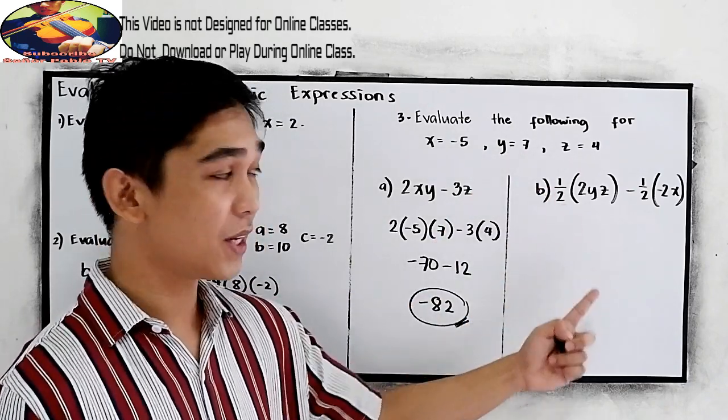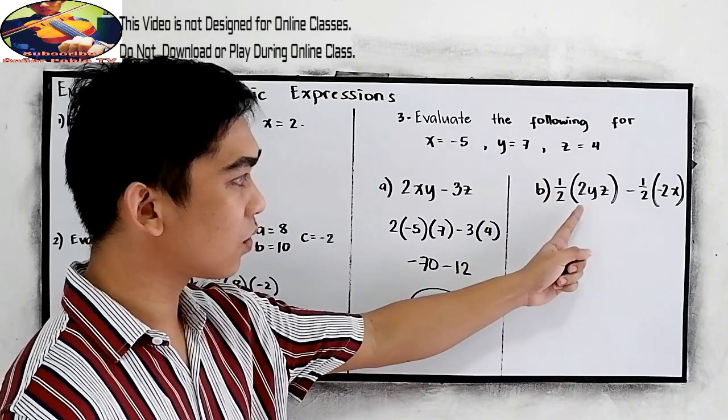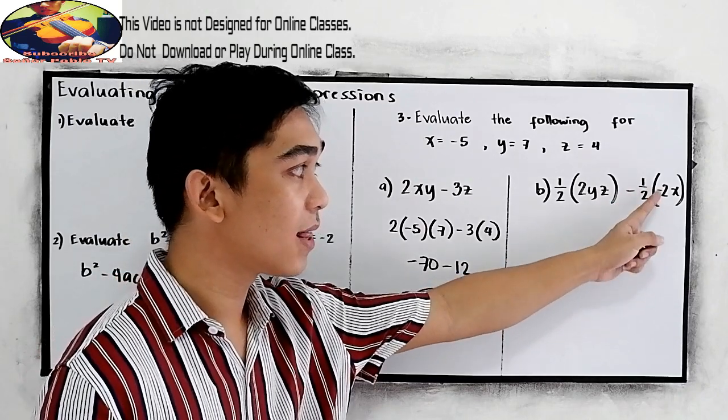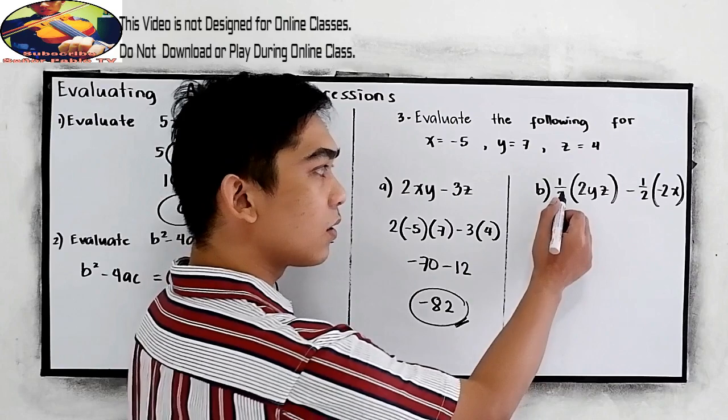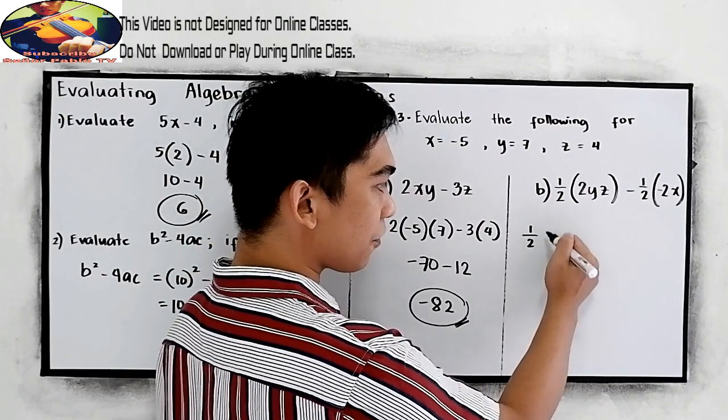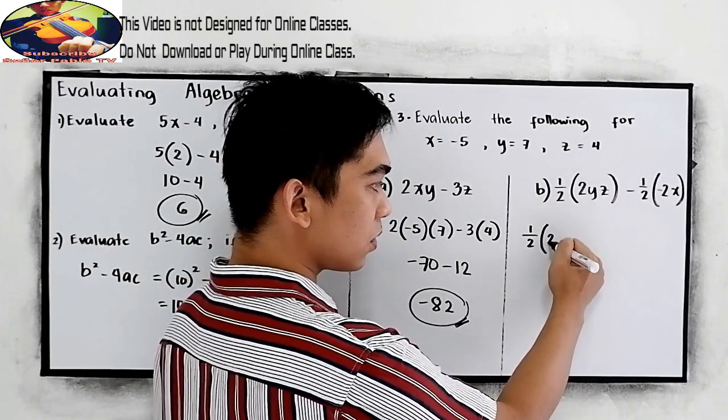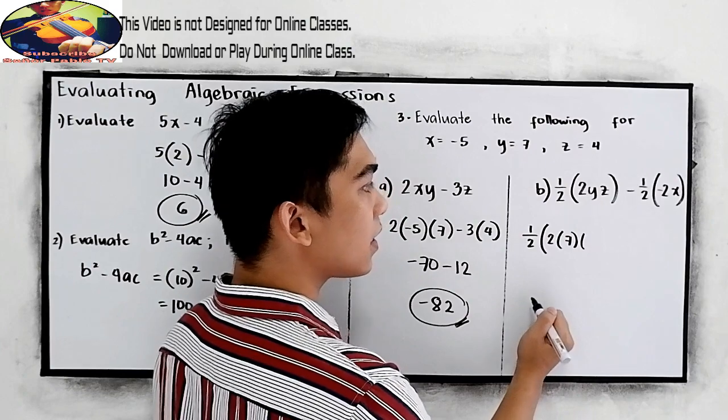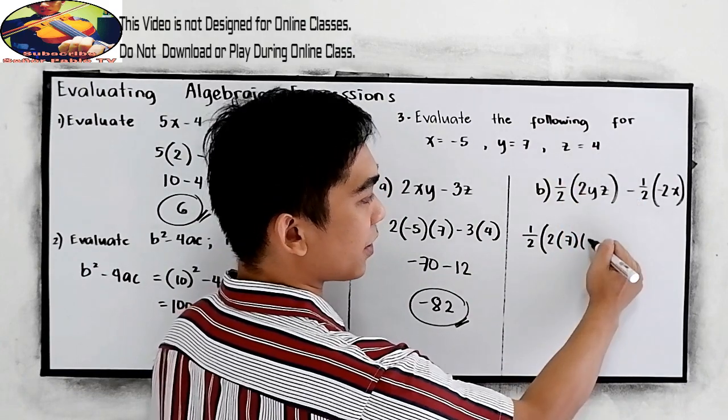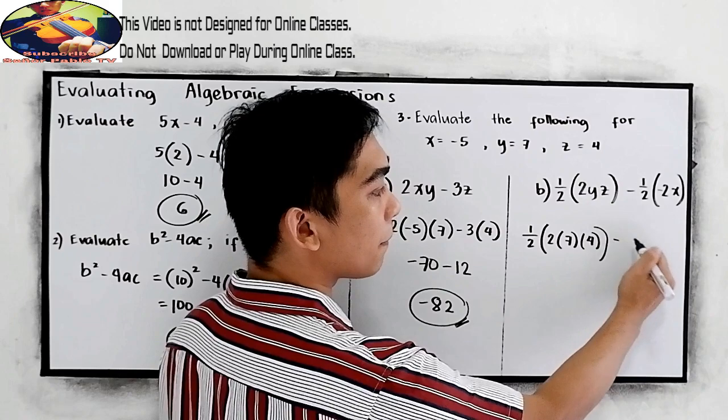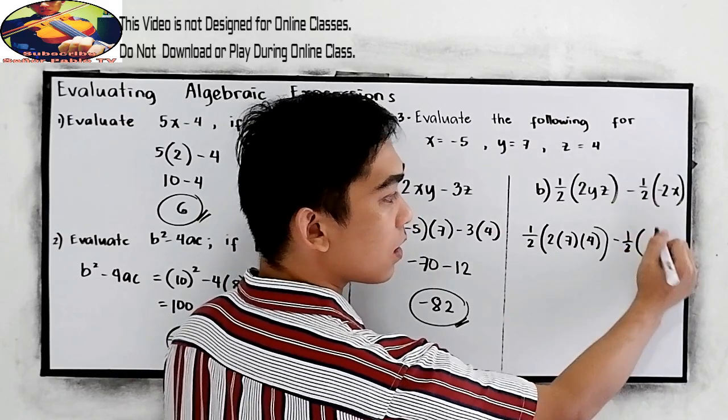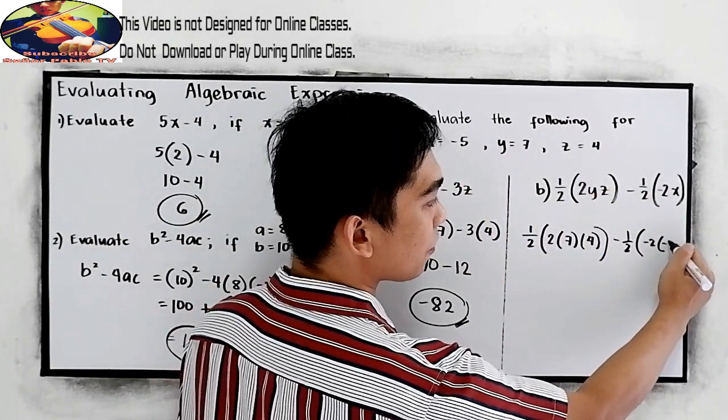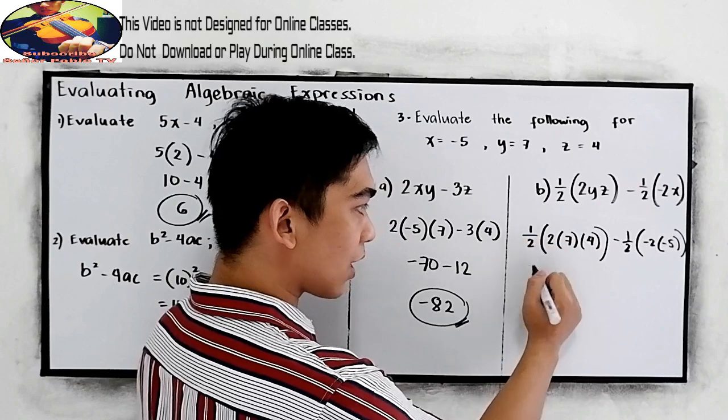Now, letter B. We have 1 half quantity 2yz, minus 1 half quantity negative 2x. Substitute, so copy 1 half quantity 2, and our y is 7, then our z is 4, minus 1 half, negative 2. So, our x is negative 5.